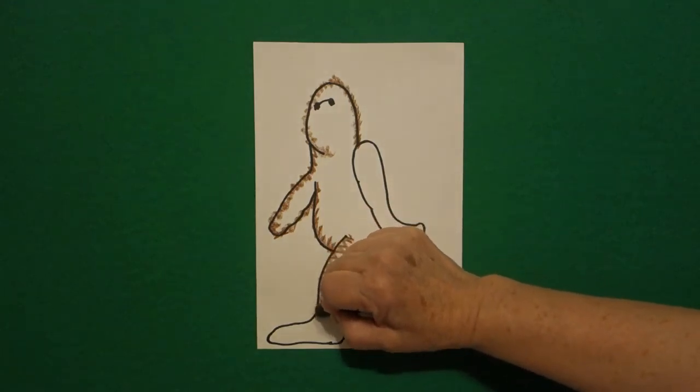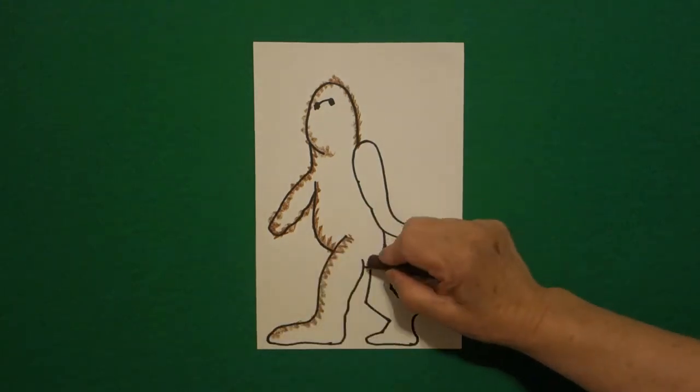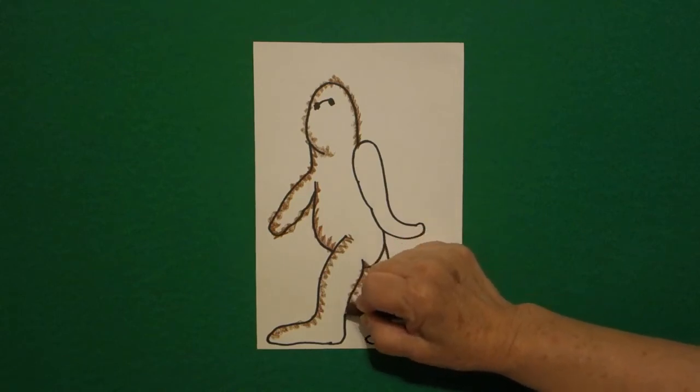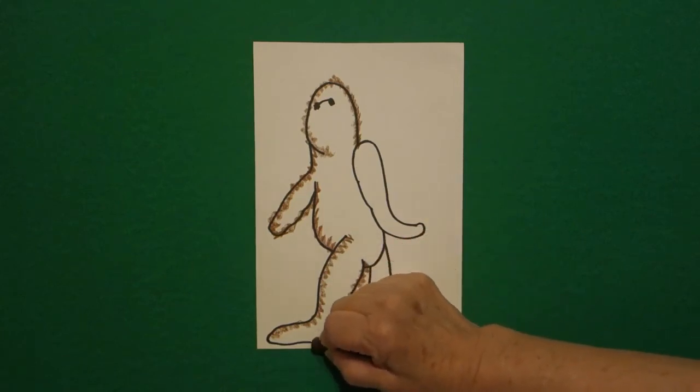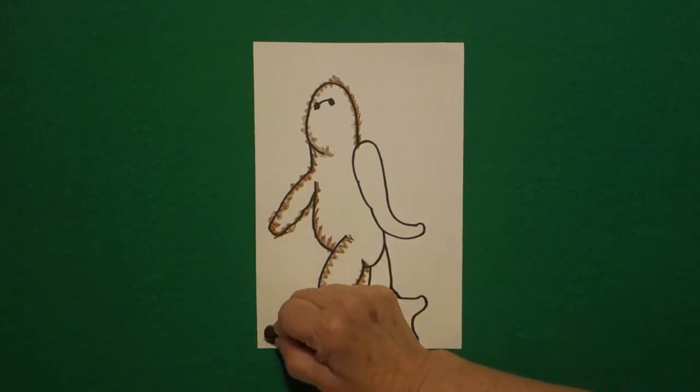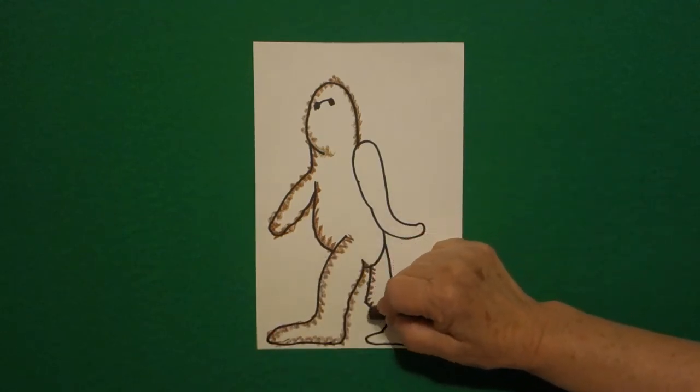You want to go over the lines because he's a very furry creature. So every black line that you drew, now you go over it with an up, down, up, down, kind of like a close zigzag line with your brown color.